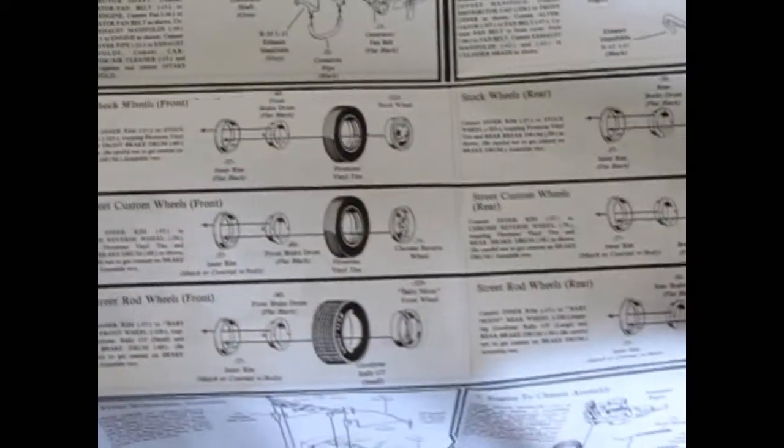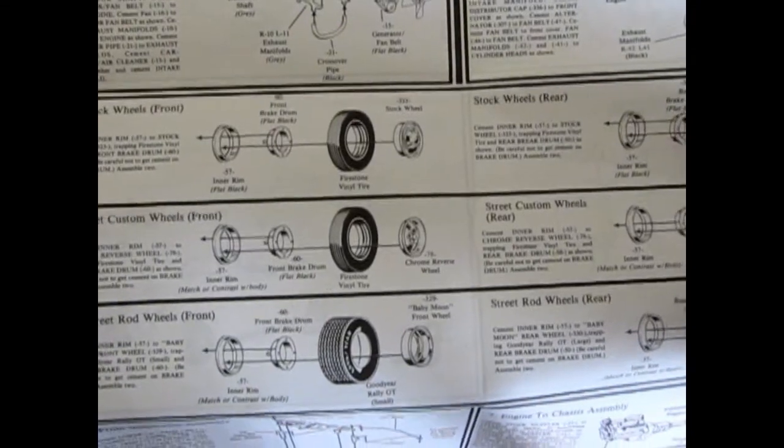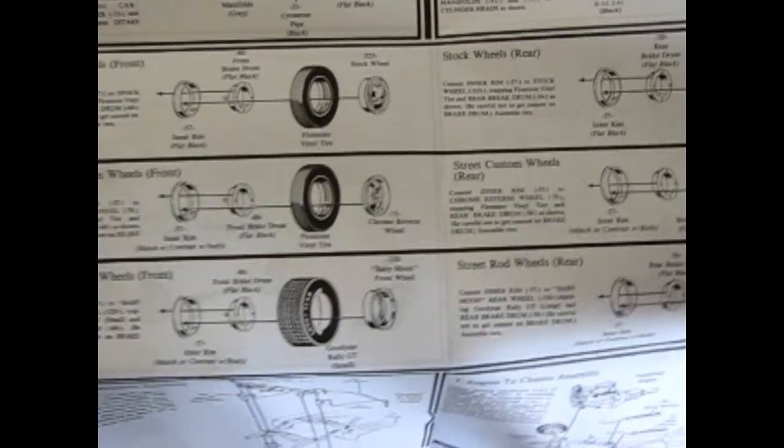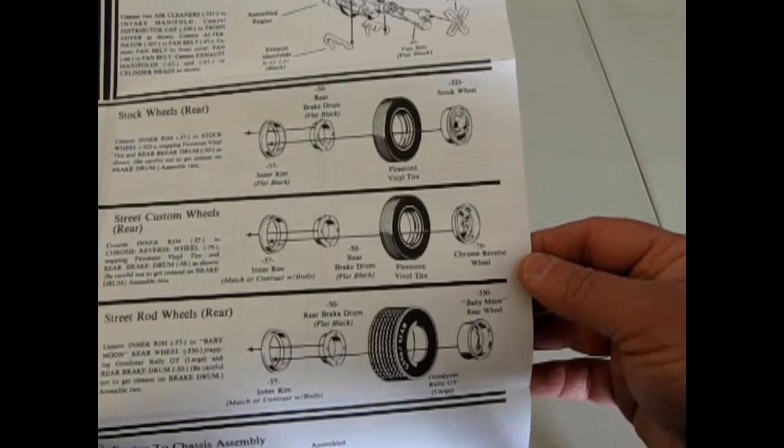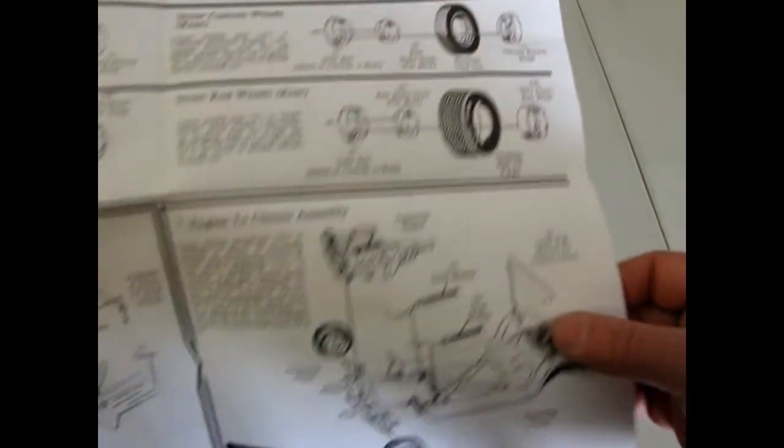And then look at the choices of wheels we get with this thing. You get the stock wheel, you get chrome reverse wheels, and you get baby moons for both the front and back. The tires are the typical Firestone vinyls and Goodyear Rally GTs.